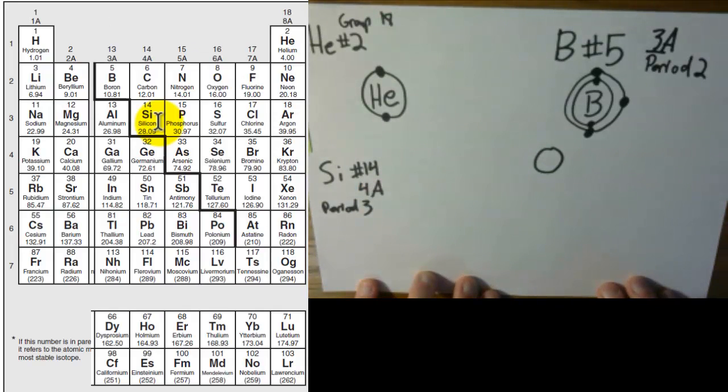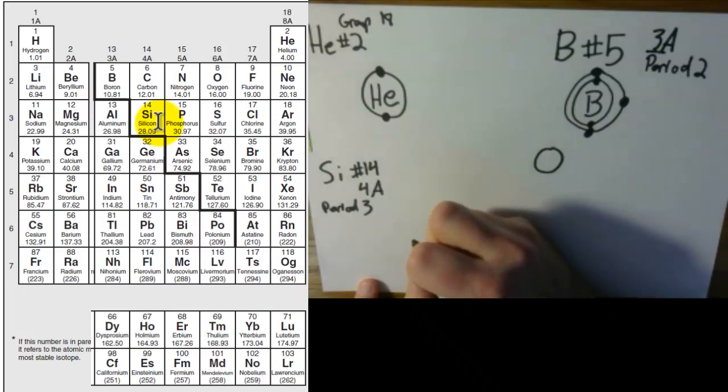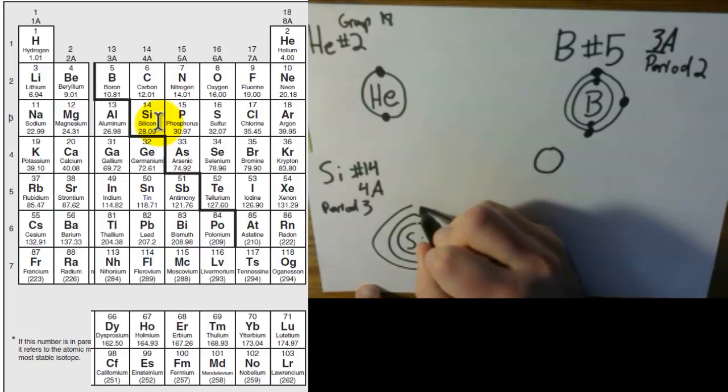Okay. So since it's in period three, that means it's going to have three rings. And since it's in group 4A, that means its outside ring will have four dots. So start with silicon, ring one, ring two, ring three. And as you can see, these aren't perfect, so your drawing doesn't have to be perfect.